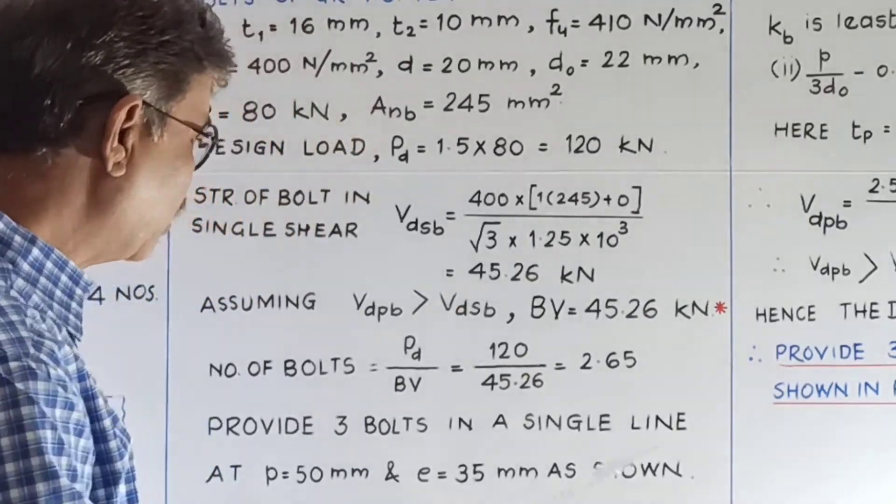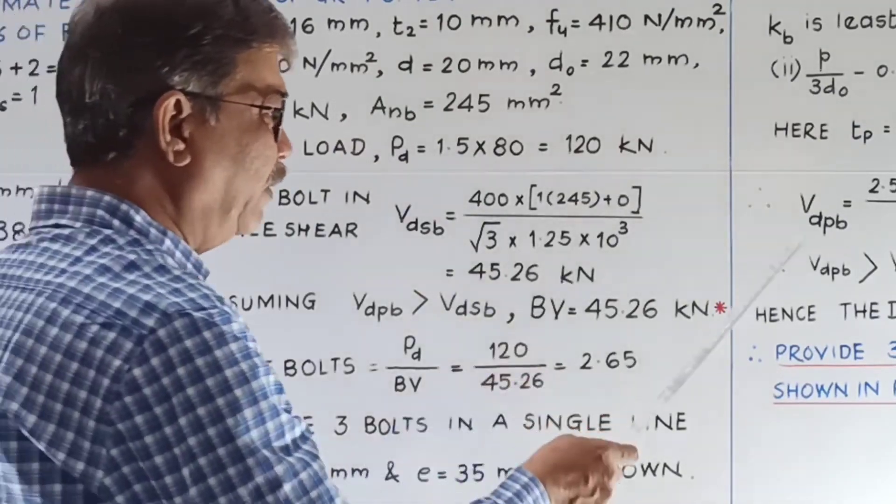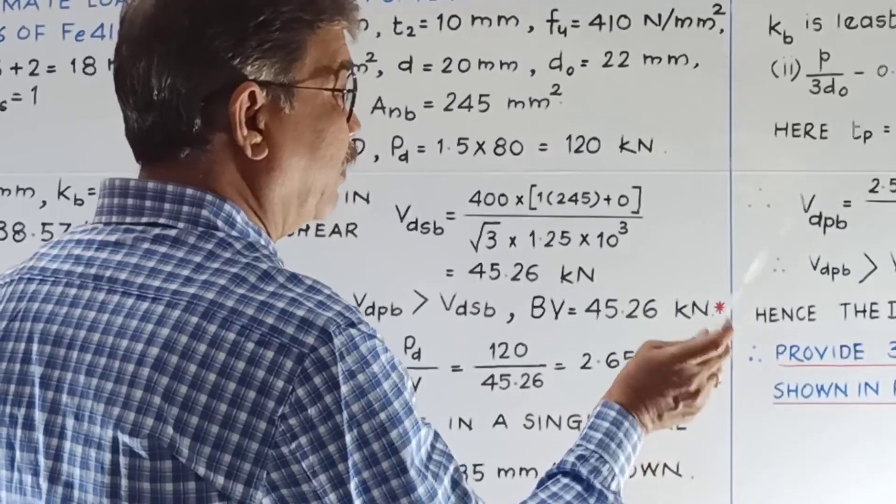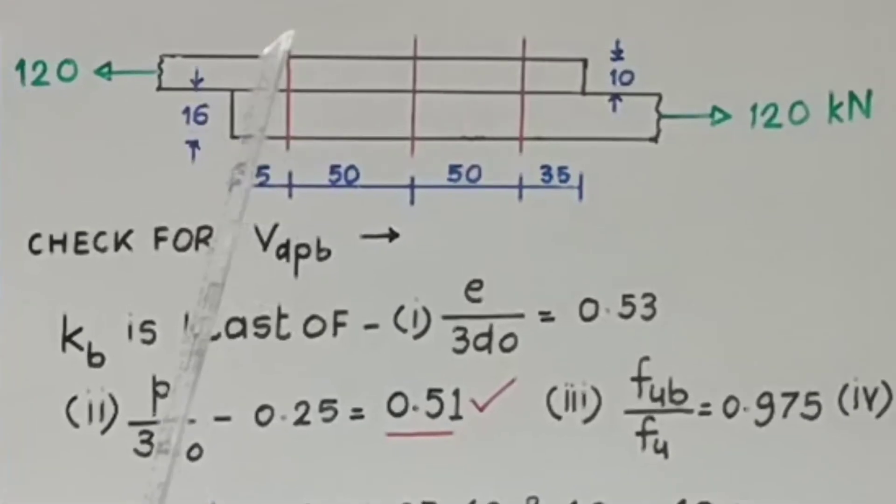Now how they are joined. So this you have assumed, if somebody assumes this value as different, then there will be difference, but this VDPB will change only, but it will be definitely greater than that. Now this is one plate of thickness 10 mm, this is another plate of thickness 16 mm. These are 2.65, that is 3 bolts, which are provided in one line. This is end distance 35 mm, pitch 50, 50, end distance 35. And this is the load.